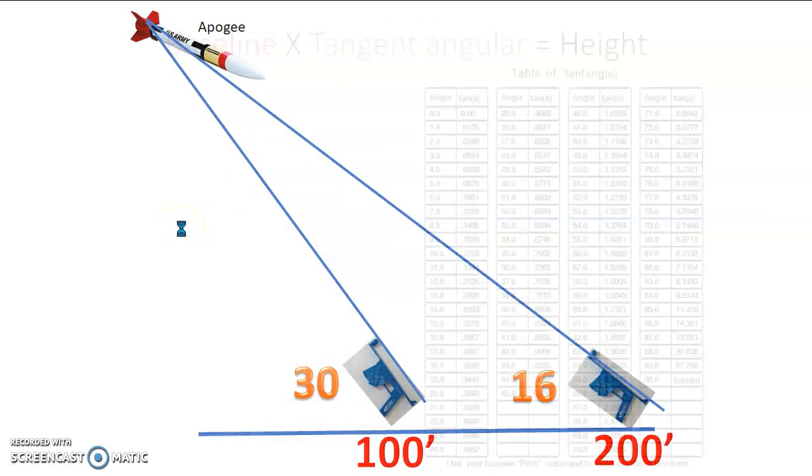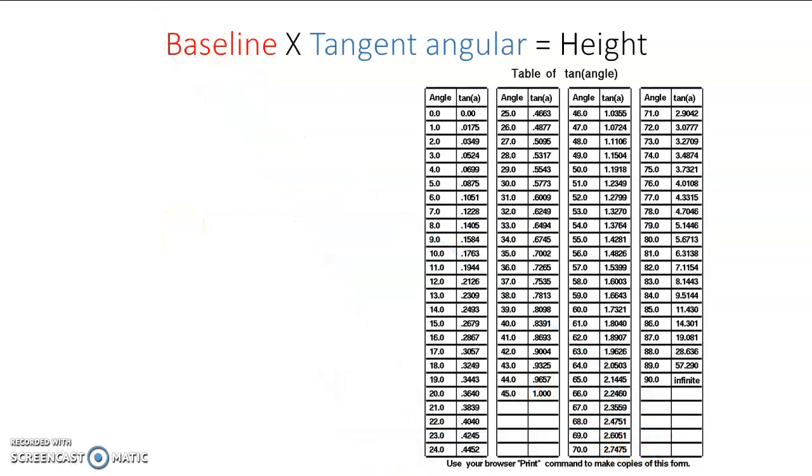So let's take a look at these two observers. Observer number one, they were at 30 degrees, right? And here we find 30 on the chart, and it converts to 0.5773. And we can round up. So 0.58 is reasonable.